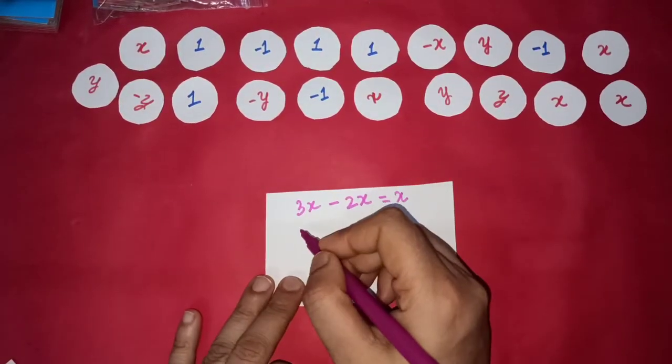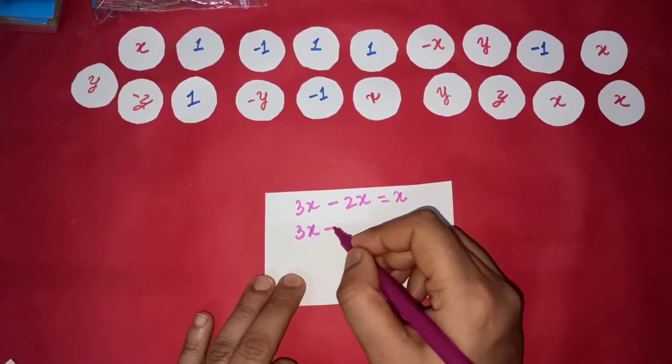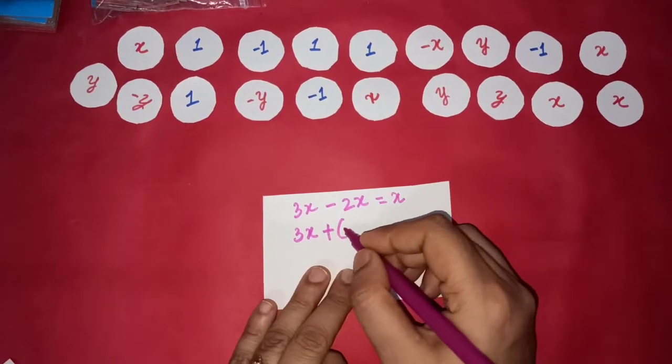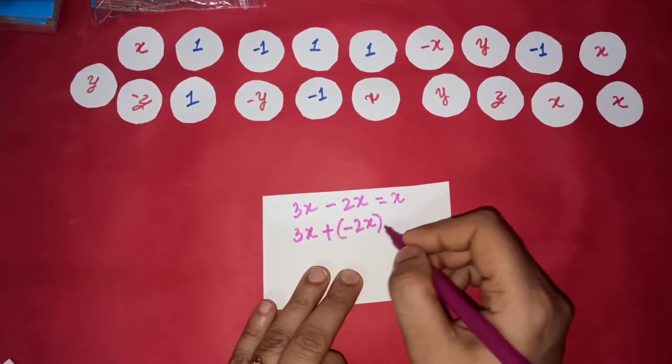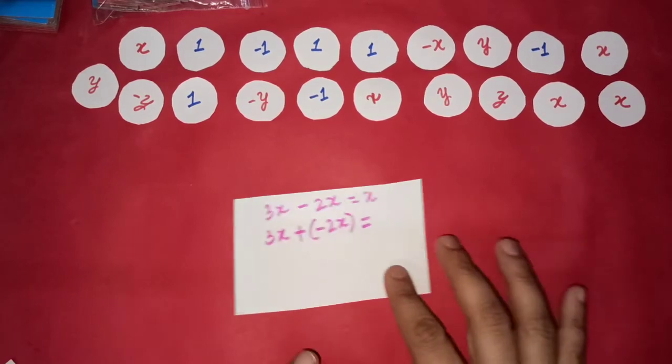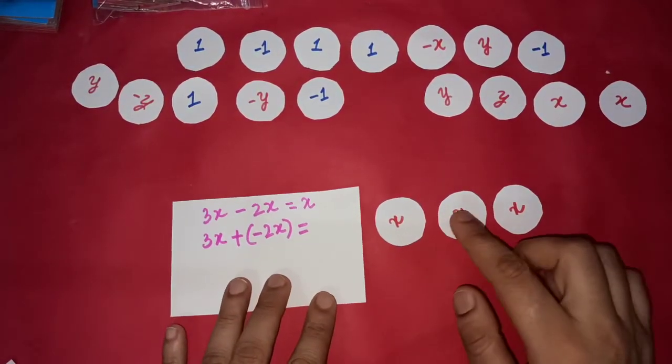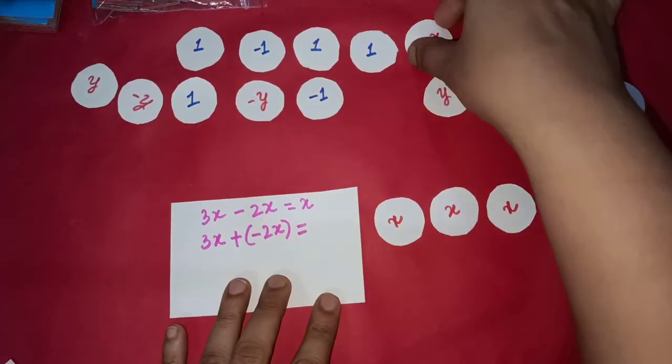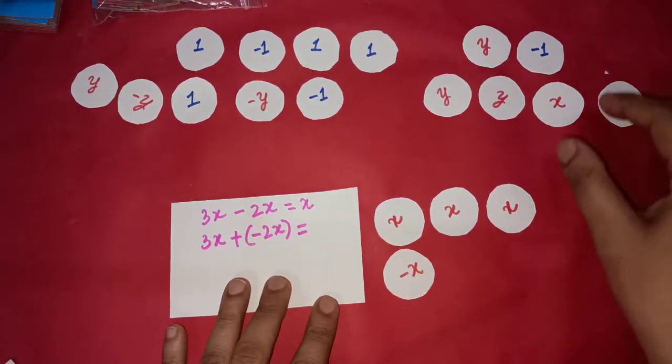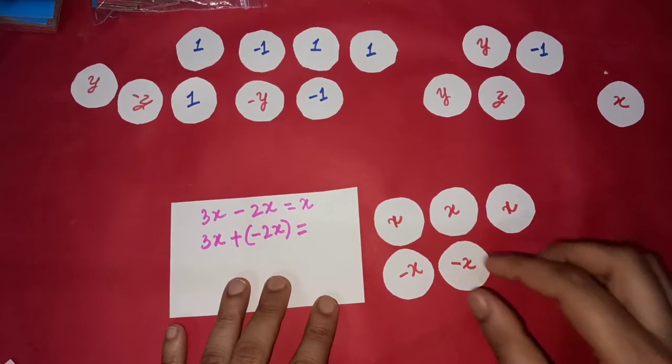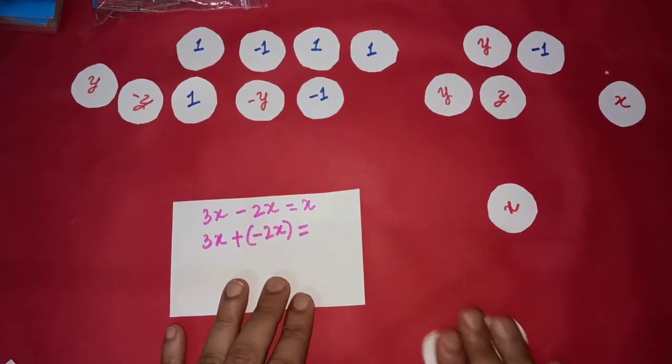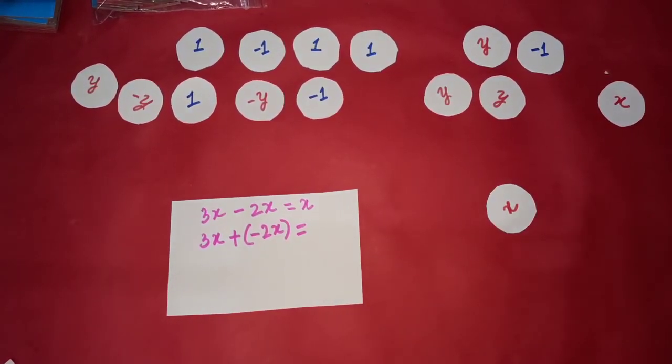This problem can also be written as 3x plus 2 negative x's. So let's see how it will work out. This is 3x. And I have to add 2 negative x's in this. So I get 2 0 pairs. Again, the answer is x.